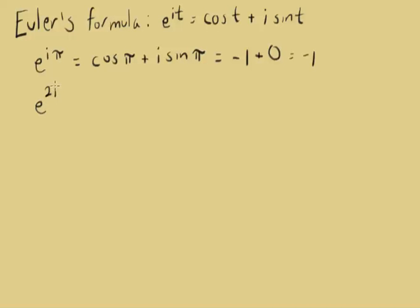e to the 2i t. Well, in this case, the t has been replaced with 2t, so what we're going to have is cosine of 2t plus i times the sine of 2t.